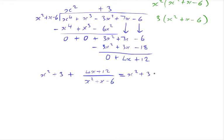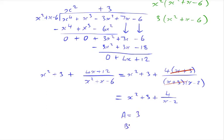We can factor out the 4 on the top and the bottom is a quadratic which we can factorize. We can see that these terms cancel out. So our final answer for this part is x squared plus 3 plus 4 over x minus 2. Therefore, our A equals 3 and our B equals 4.